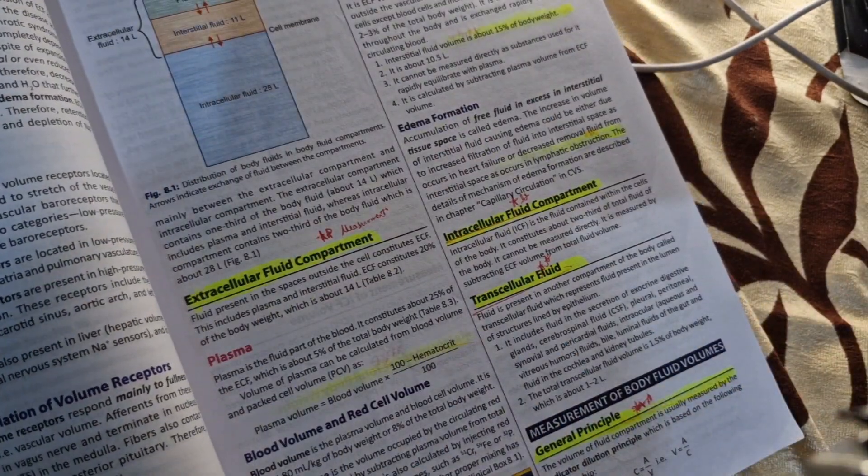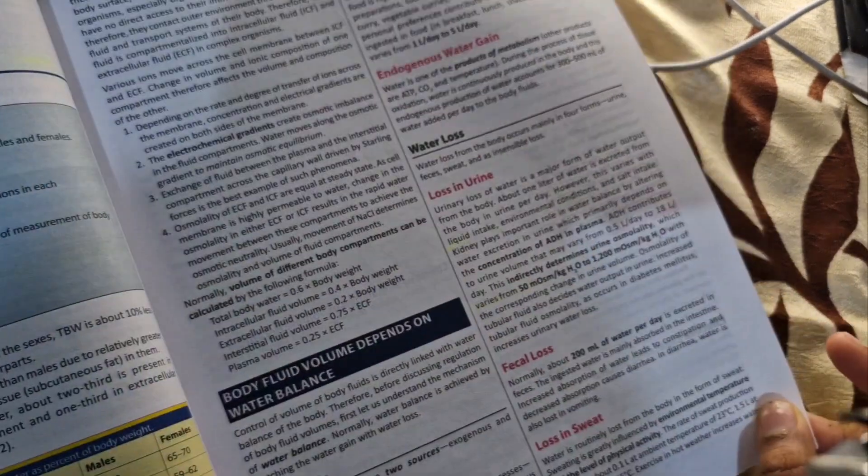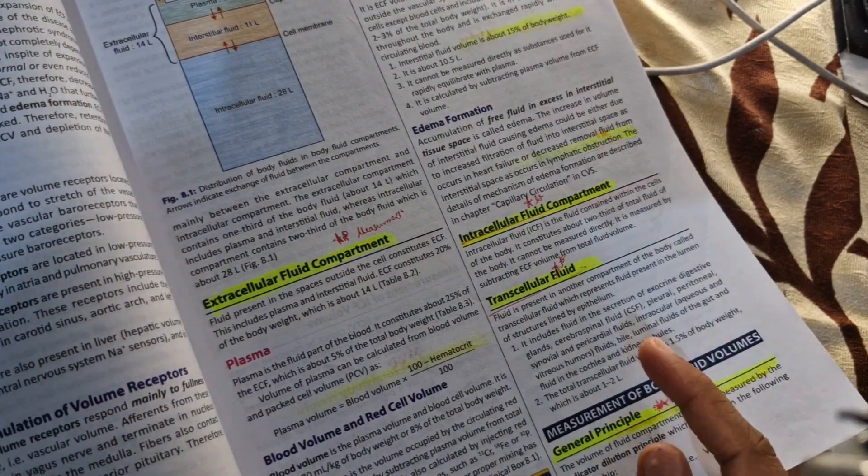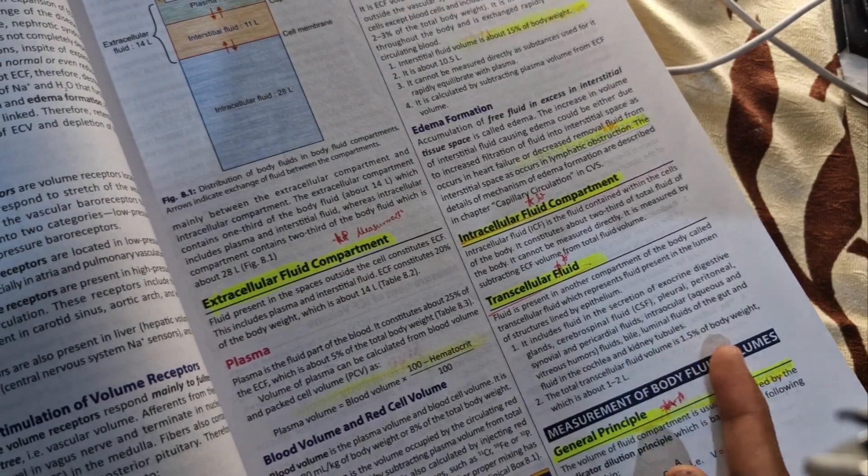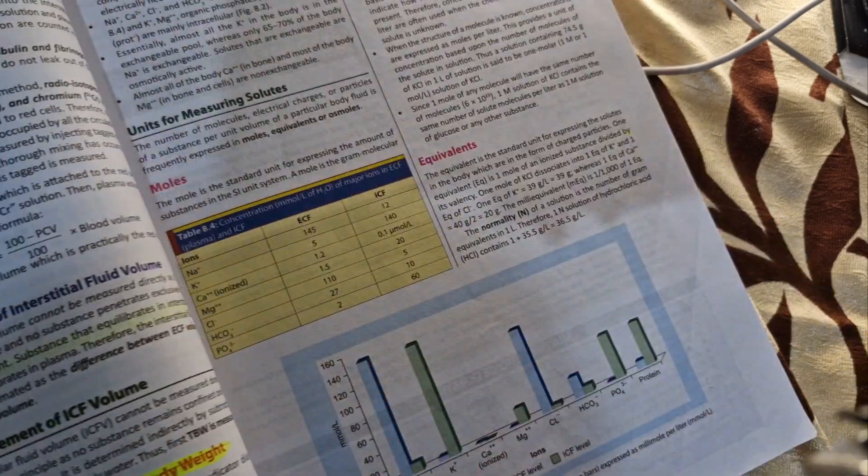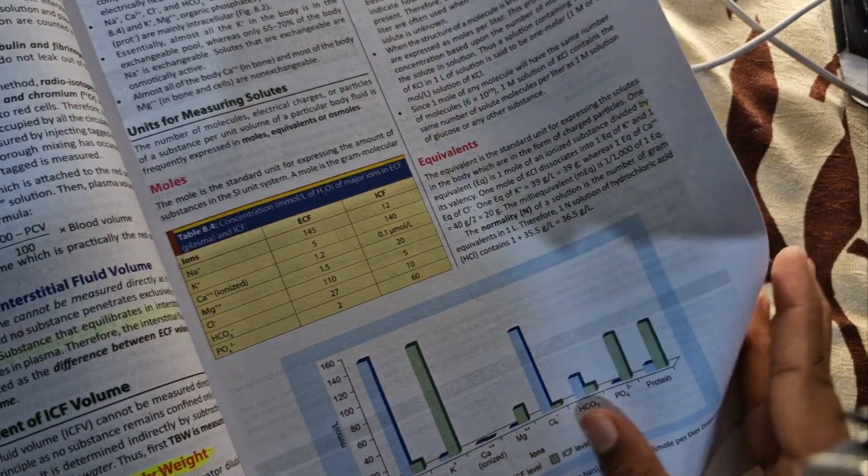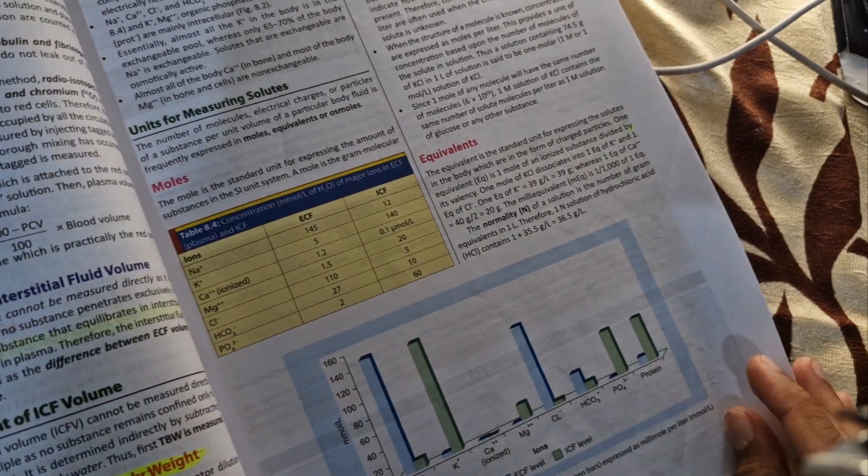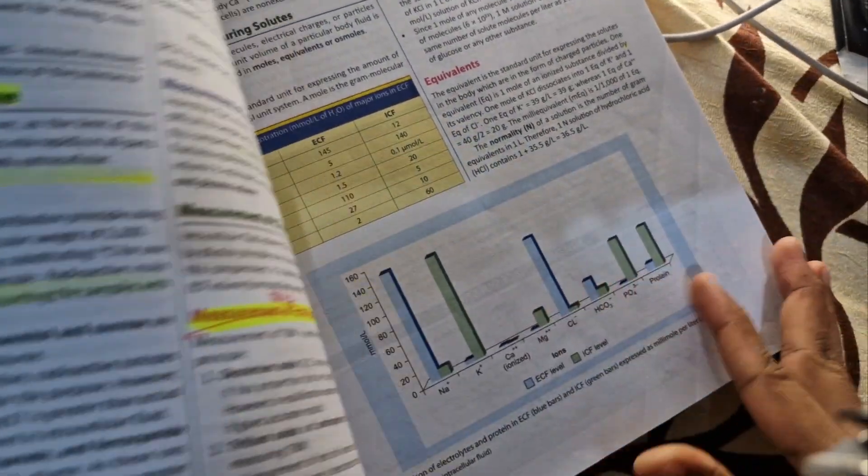And the next chapter body fluids. Measurement of body fluid and the body fluid compartments, how they are divided - that's important. Measurement of ECF and ICF. Total body weight. Measurement of total body weight is important.